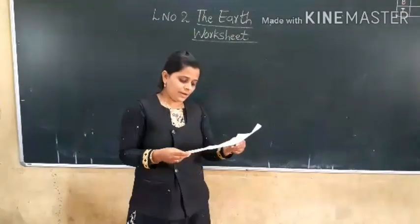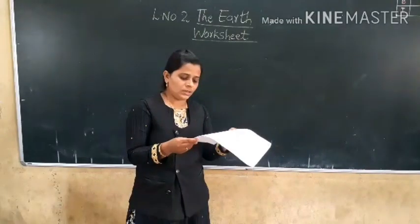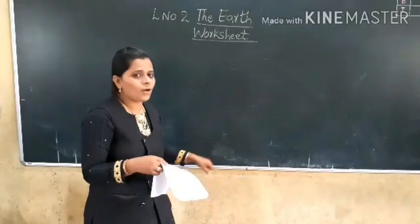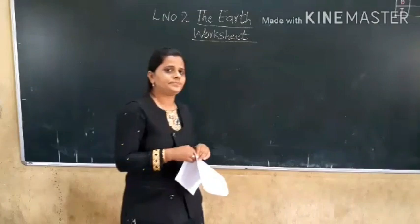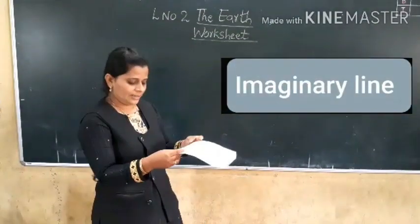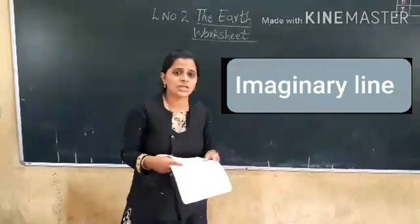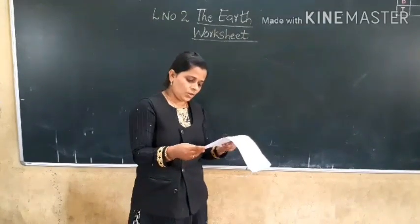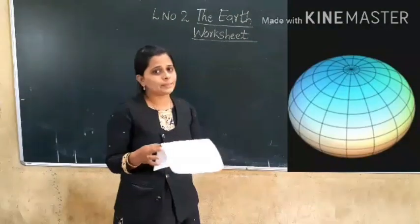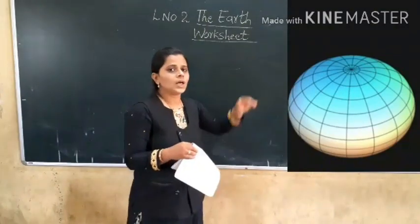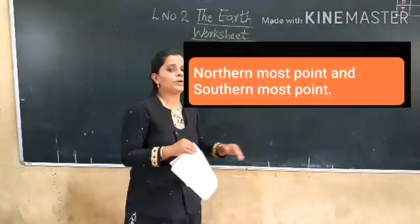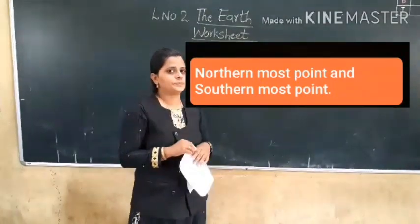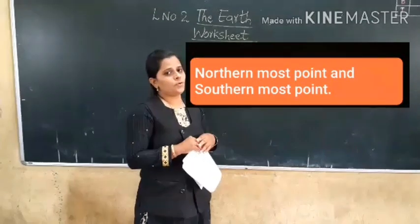Now the second one: What is the axis of the Earth? The axis of the Earth is what we call an imaginary line. Right answer — imaginary line. Next: What are the North Pole and the South Pole? The North Pole is the northernmost point and the South Pole is the southernmost point. Right answer — northernmost point and southernmost point.